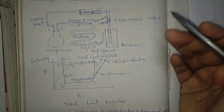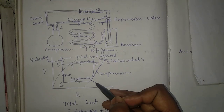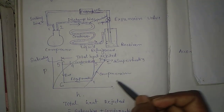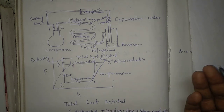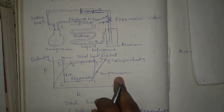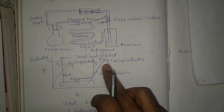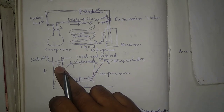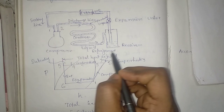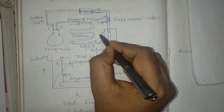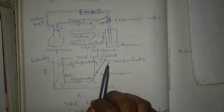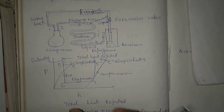The main function of the condenser is to reject heat. In the pH diagram, process one to two represents the compression process — a reversible adiabatic, or isentropic, process. From two to five is the total heat rejection process, which occurs within the condenser. This total heat rejection process covers processes two to three, three to four, and four to five.